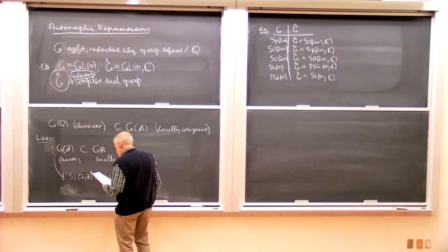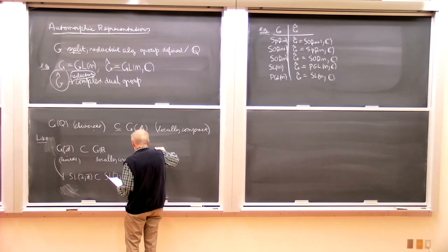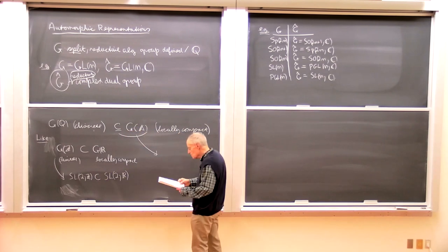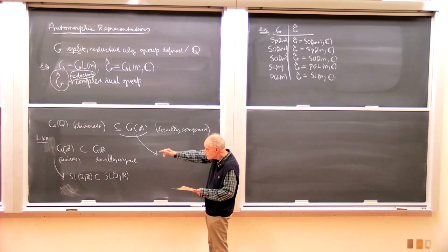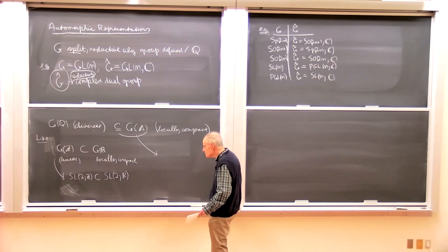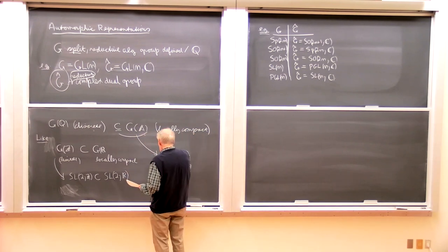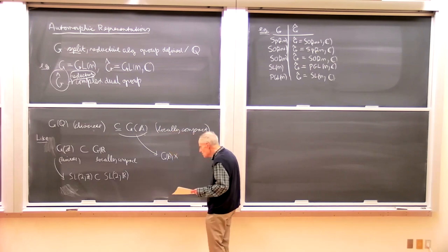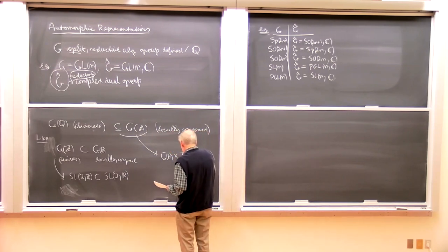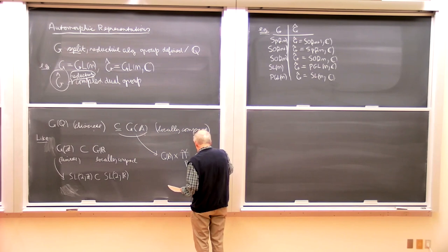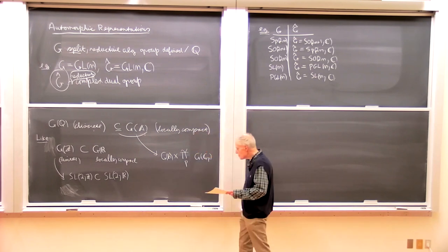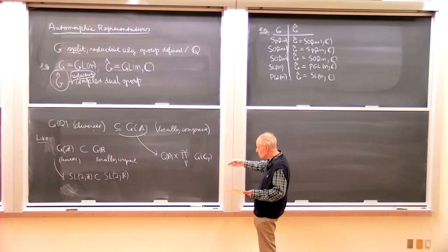G of the adeles is — and I will explain this a little more later — by definition G(R), the group of real points, times something that's almost a compact group: it's the product over all p-adics, or the so-called restricted direct product of G(Q_p). I'd like to get on to the actual Langlands program. The p-adic numbers are the completion of the rational numbers with respect to another absolute value, which reflects divisibility.